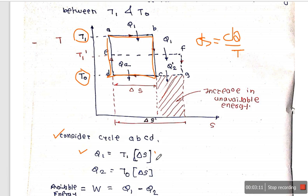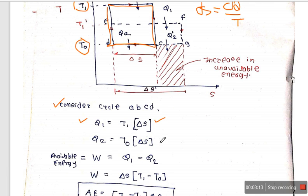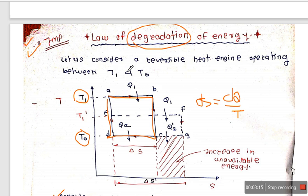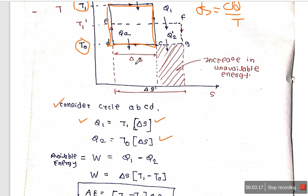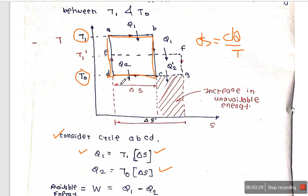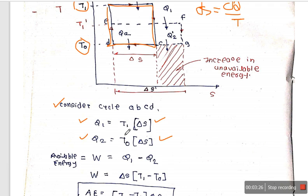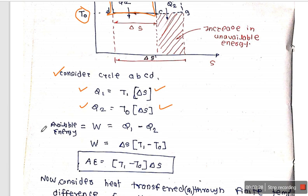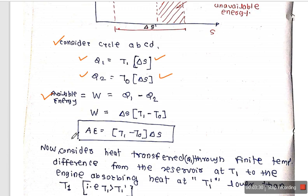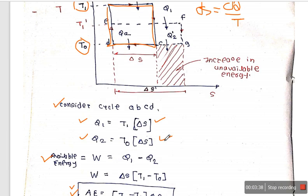Applying the formula for both heat addition Q1 and heat rejection Q2 for cycle ABCD: the available energy is defined as heat added minus heat rejected, which equals (T1 minus T0) times delta-S. This is the available energy for the first cycle.